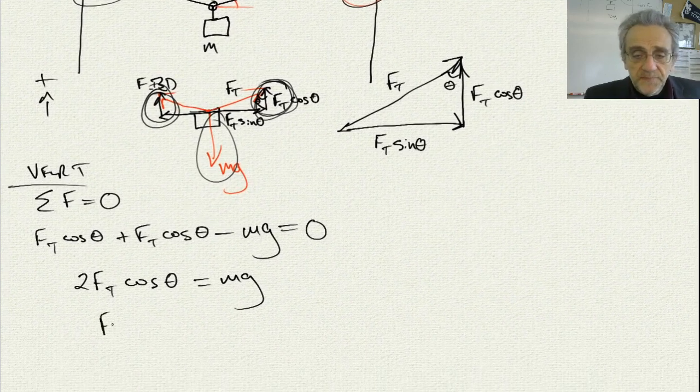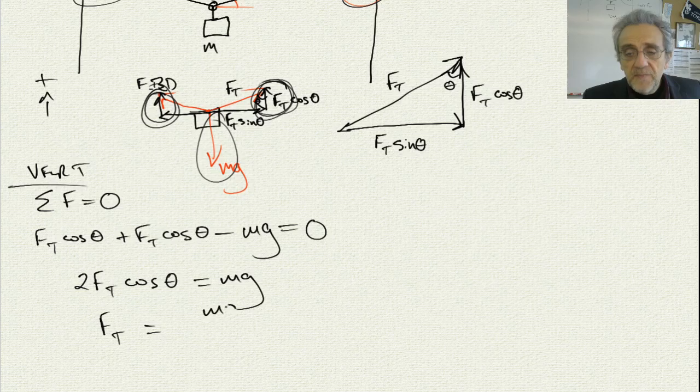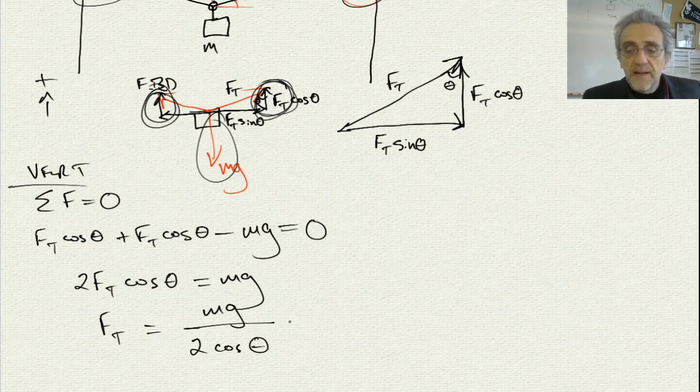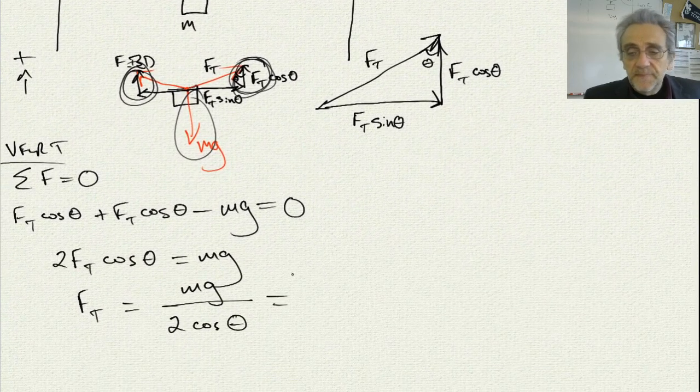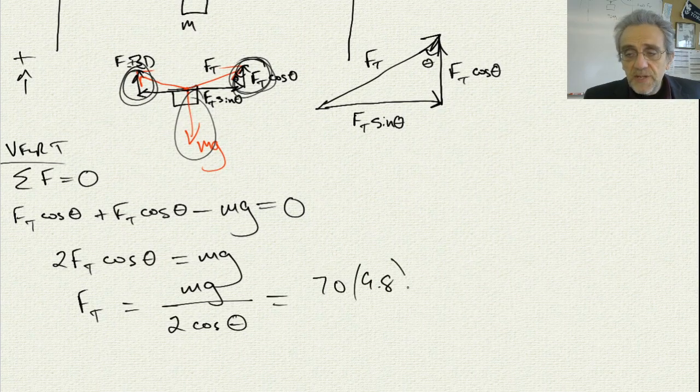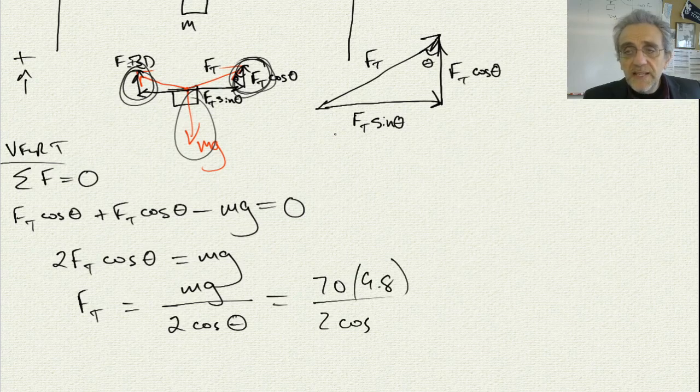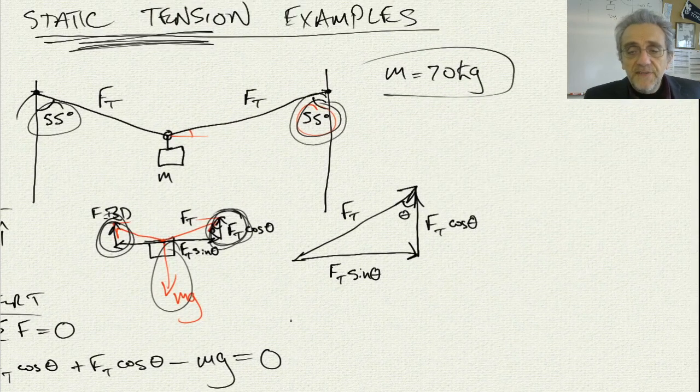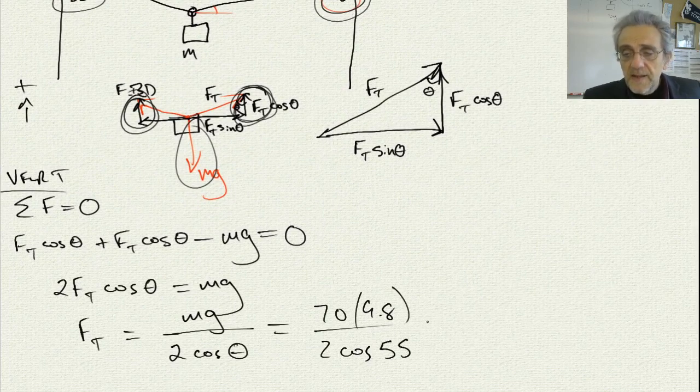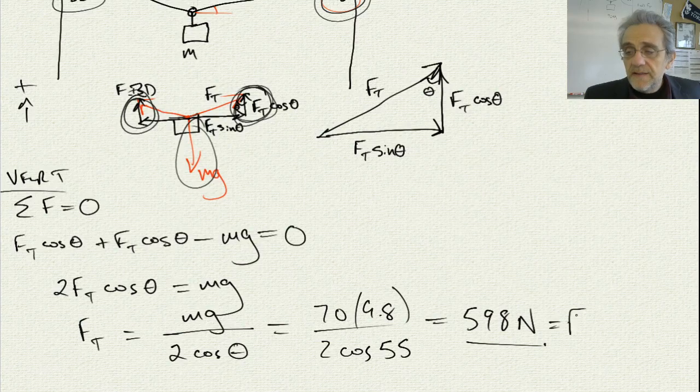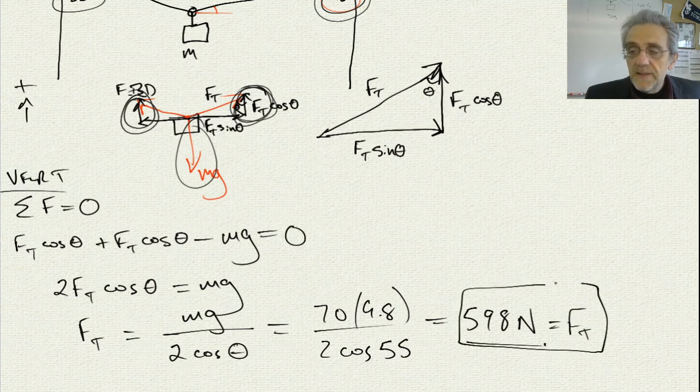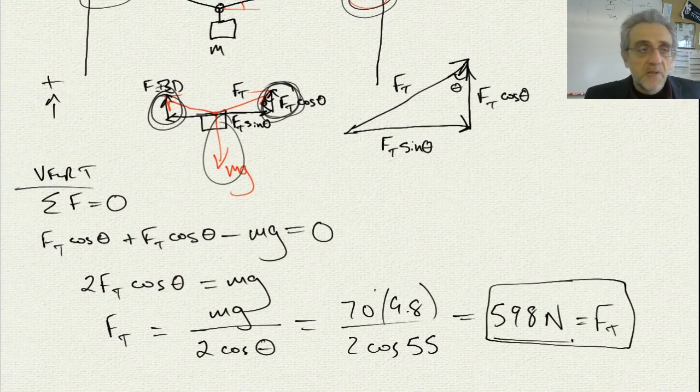And finally, solving for Ft, we will get mg divided by two cosine theta. Now we can plug our values in. And we know that the mass is 70 kilos. So, 70 times 9.8 divided by two times cosine, and the angle here is 55 degrees. And we'll get, so the tension ends up being 598 newtons. And that's our tension force in this rope. Okay? That's the end of that problem.